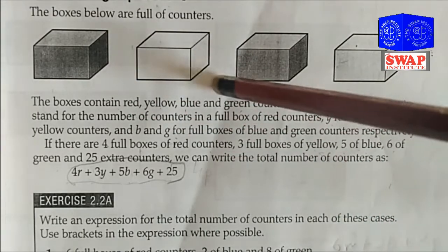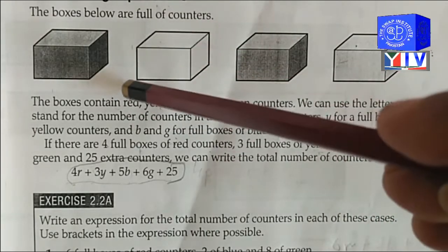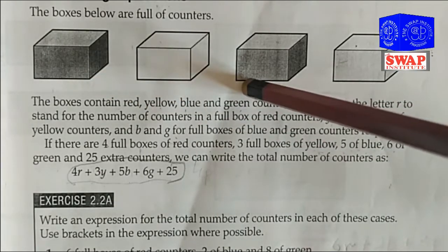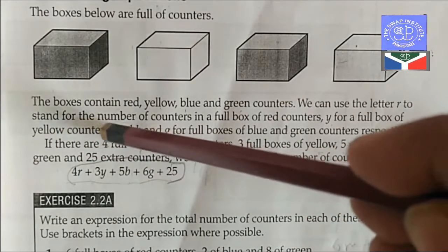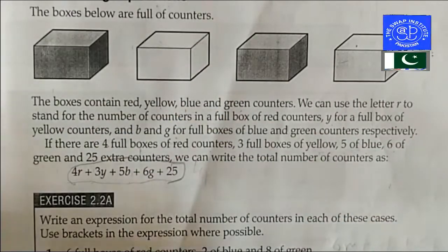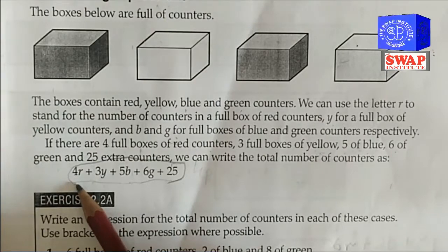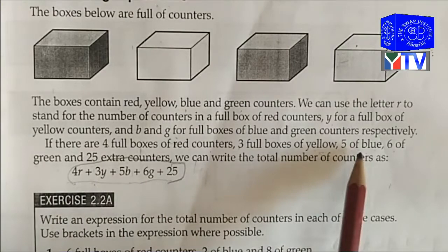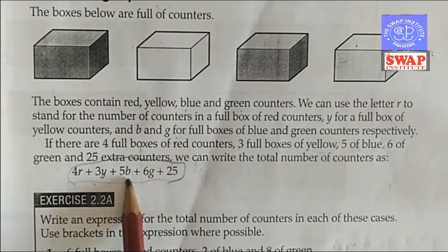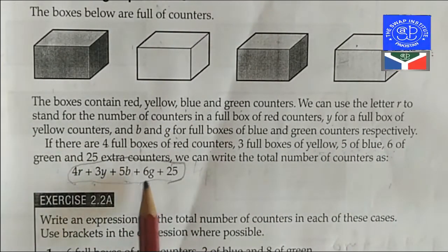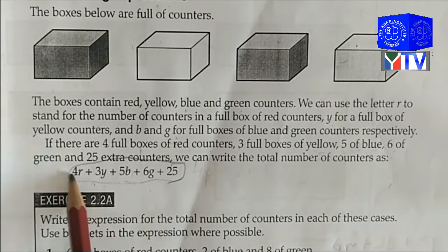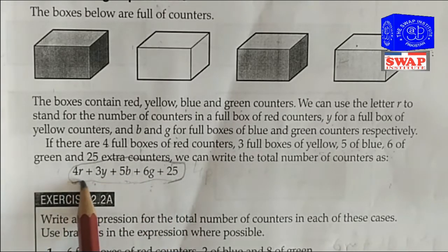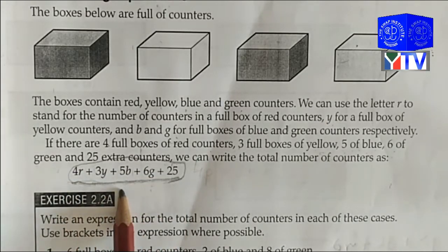In this example, boxes contain red, yellow, blue, and green counters. We use r for red, y for yellow, b for blue, and g for green. If there are four full boxes of red, it will be 4r. Three full boxes of yellow will be 3y. Five of blue means 5b, and six of green means plus 6g. Twenty-five extra counters means plus 25. So you can see we have constructed an expression.